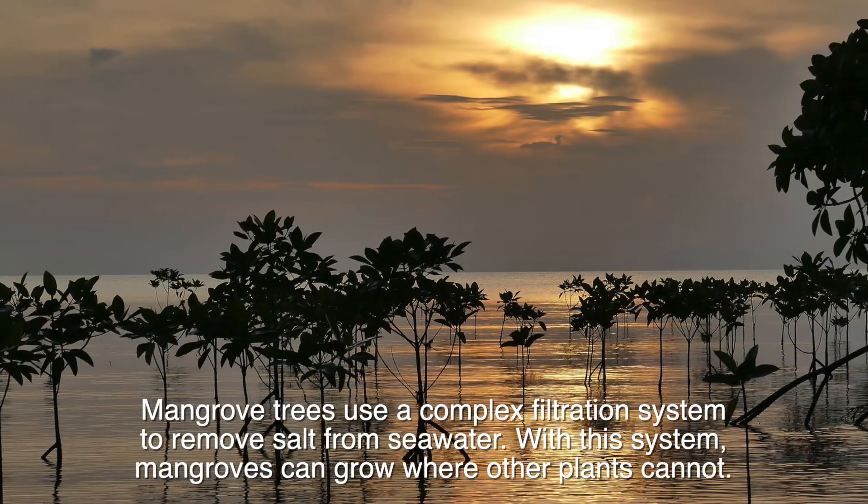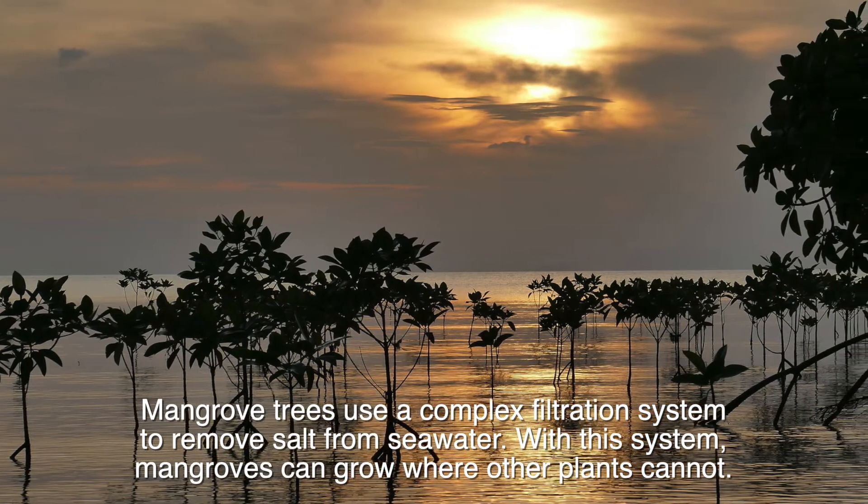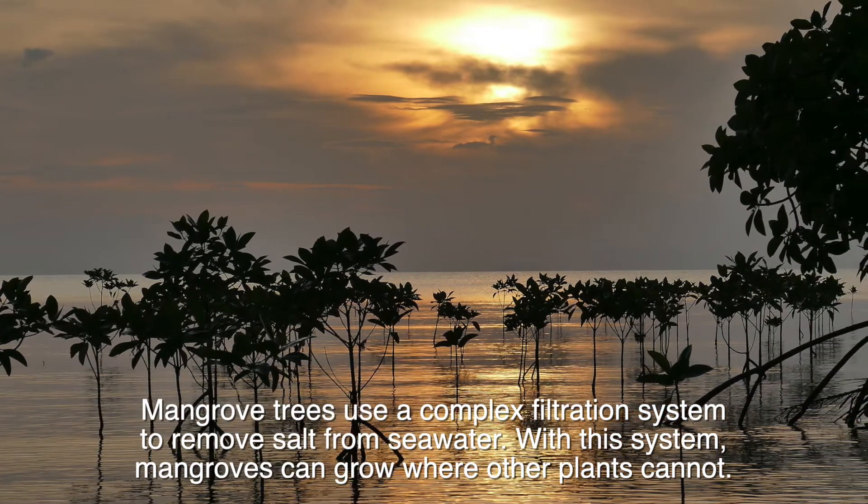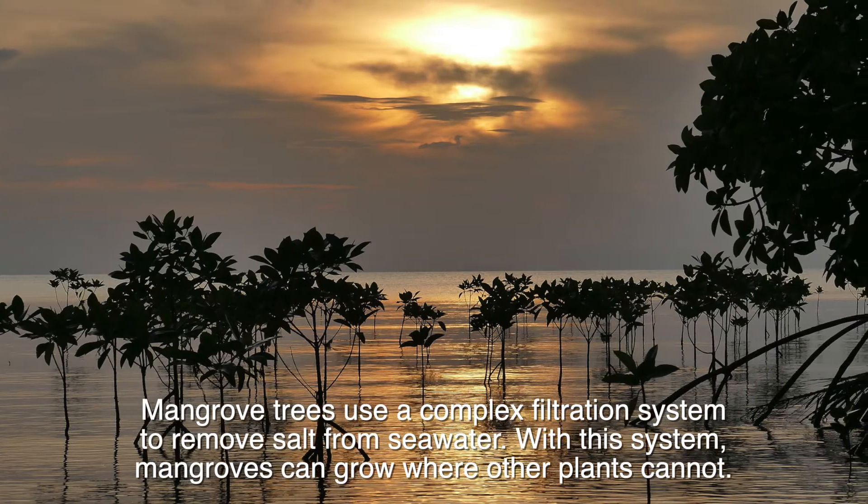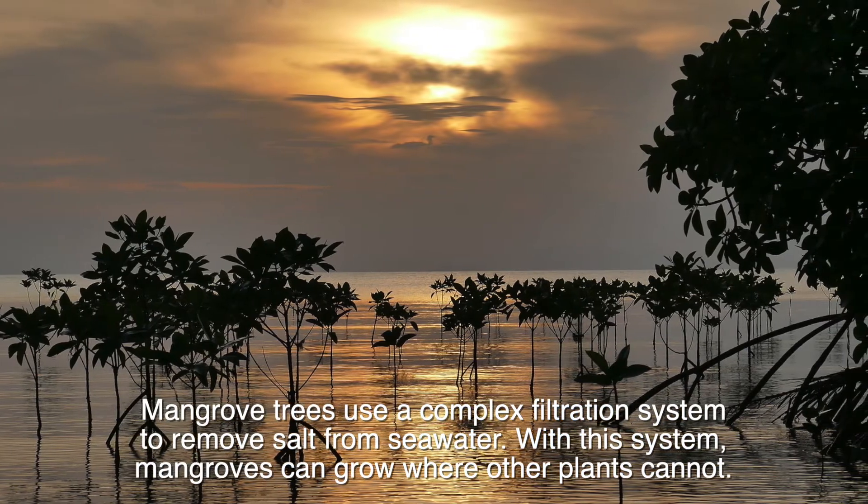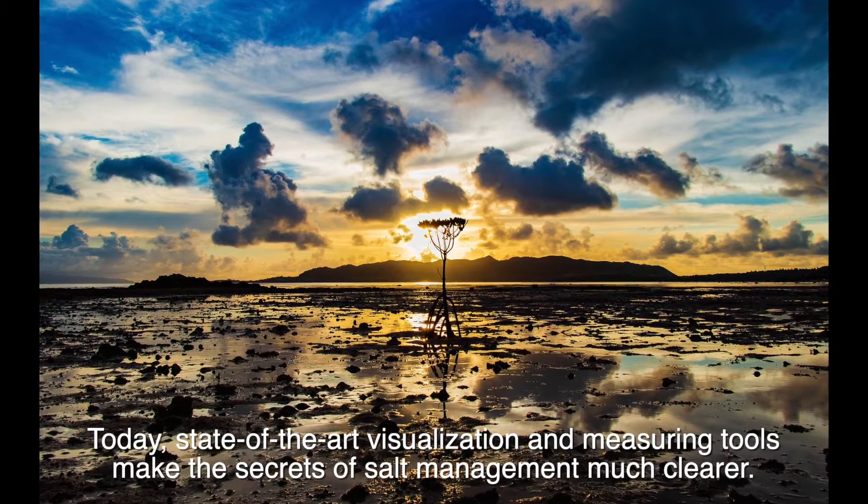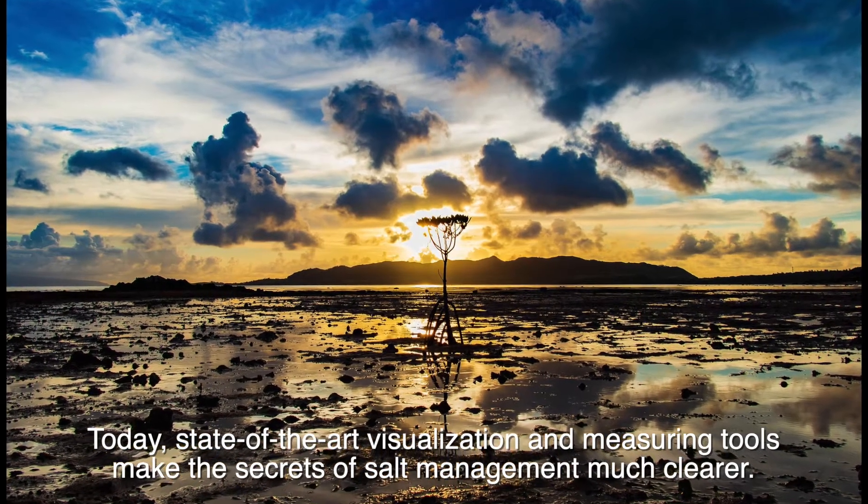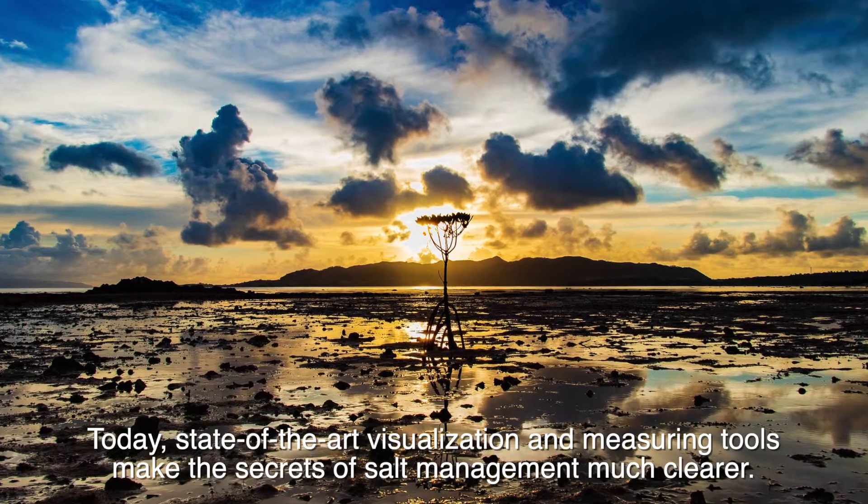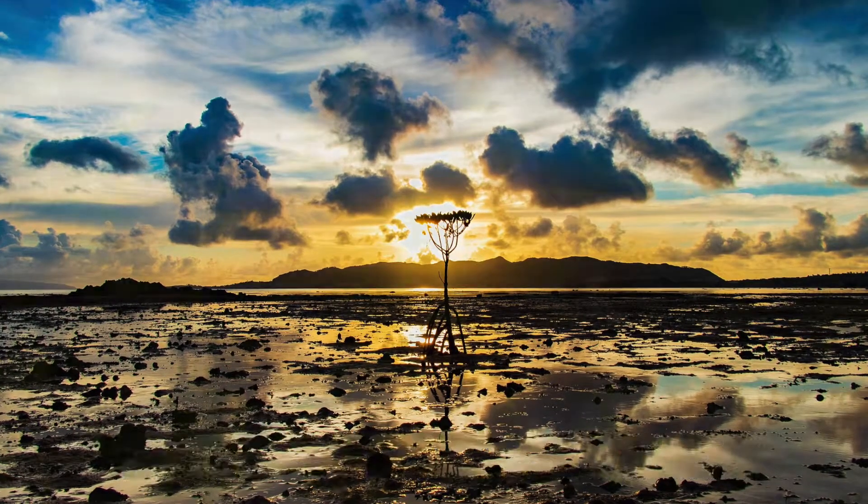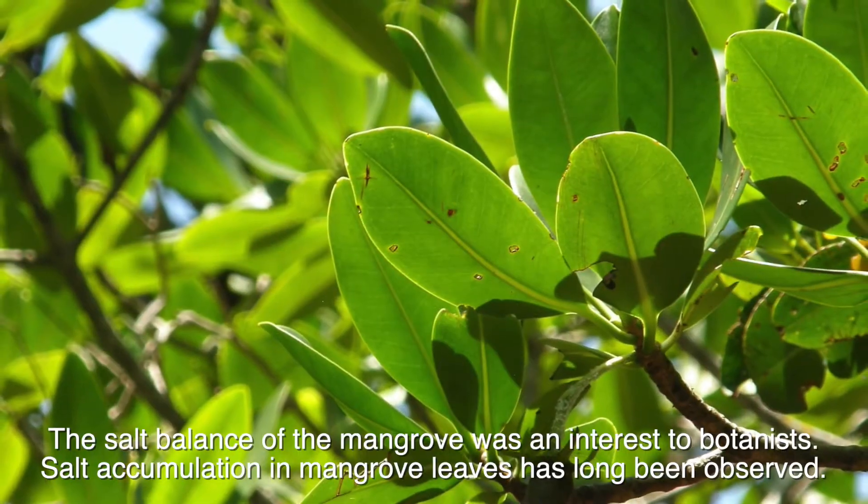Mangrove trees use a complex filtration system to remove salt from seawater. With this system, mangroves can grow where other plants cannot. Today, state-of-the-art visualization and measuring tools make the secrets of salt management much clearer.